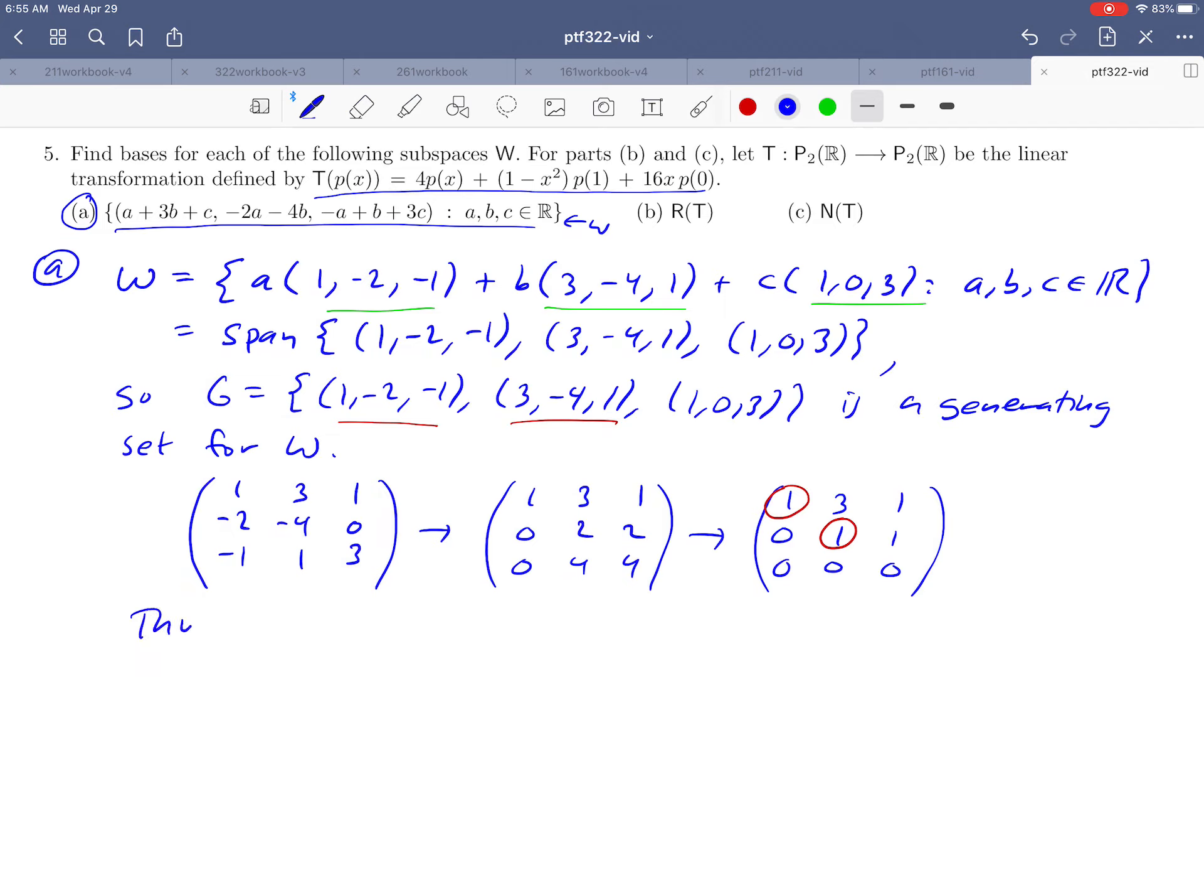Thus beta equals {(1, -2, -1), (3, -4, 1)}. That must be a basis for the set that we're calling W.